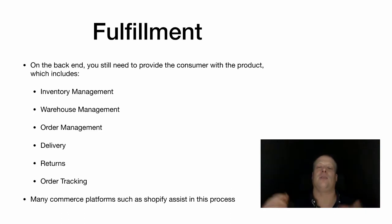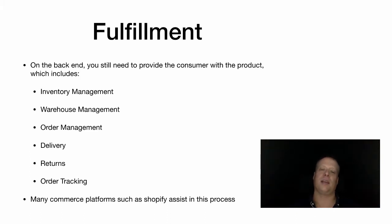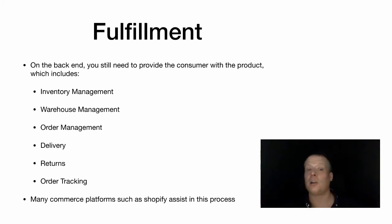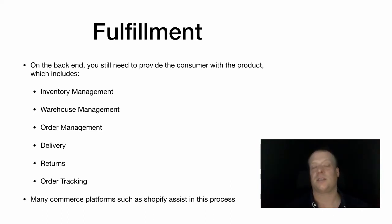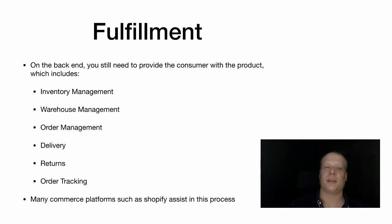Once you've got those steps done you essentially have a system set up, but you've now sold something and have to fulfill it. On the back end you'll still need to provide the consumer with the product, so you need a system that handles inventory management, warehouse management, order management, delivery, returns, and order tracking — so you can provide customers with updates on where their product is right now. Many commerce platforms such as Shopify will assist you in this process.